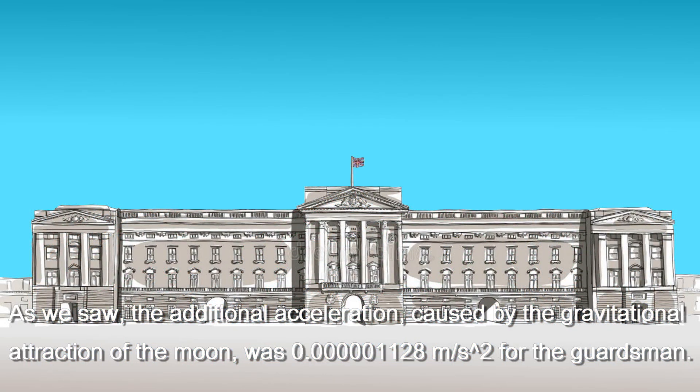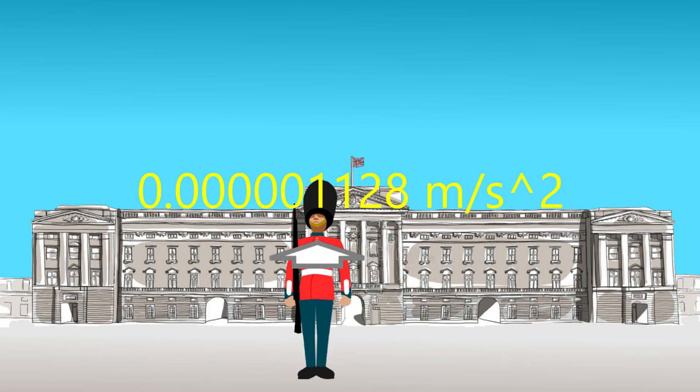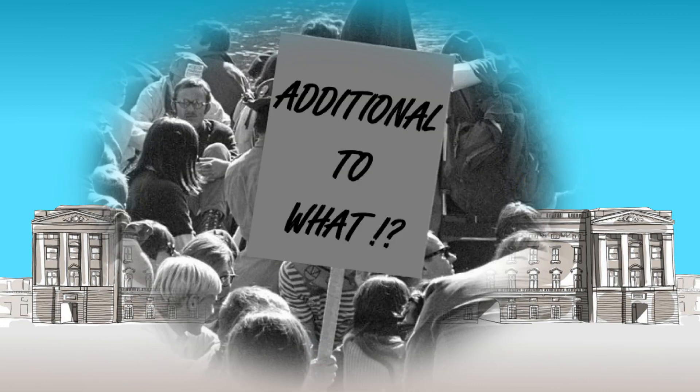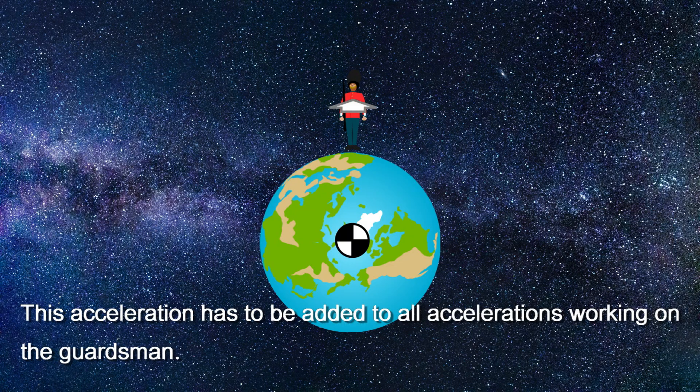As we saw, the additional acceleration caused by the gravitational attraction of the Moon was 1.128×10^-6 meters per second squared for the Guardsman. Additional to what? This acceleration has to be added to all other accelerations working on the Guardsman.